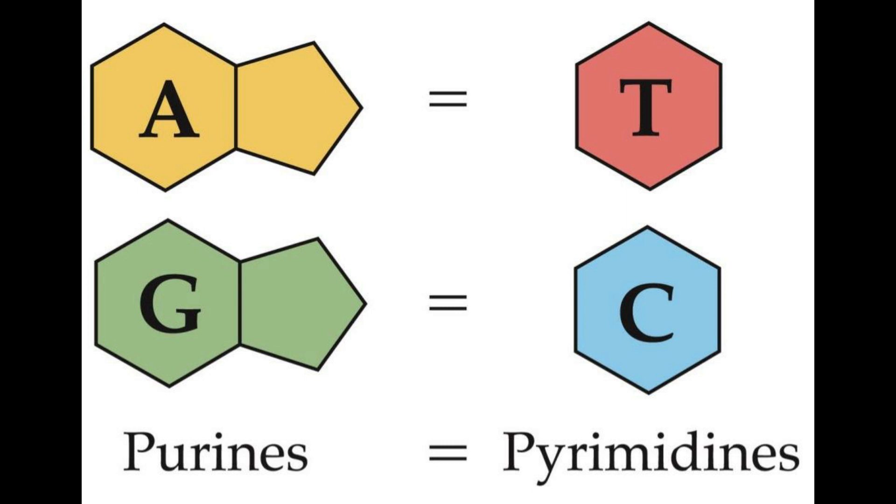If there were two pyrimidines, this would make a two ring gap. In order to keep the width of the DNA double helix constant, it therefore follows that a purine should always attach with a pyrimidine.